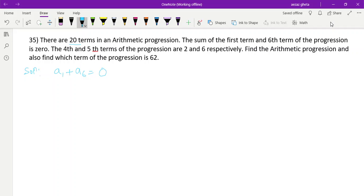The 4th and 5th terms of the progression are 2 and 6 respectively. Find the arithmetic progression and also find which term is 62. We have to find AP and which term equals 62, meaning a_n = 62, so n equals question mark. For that we need to find a and d.